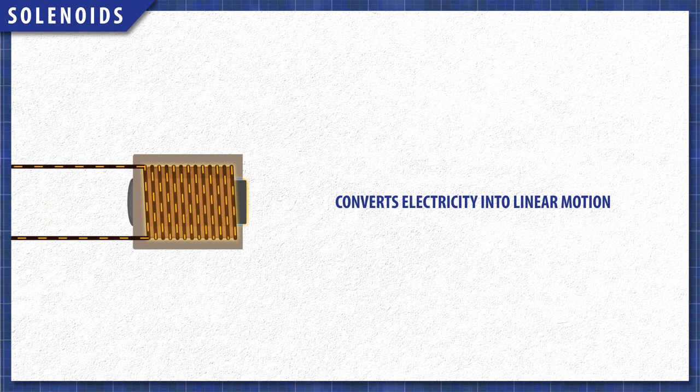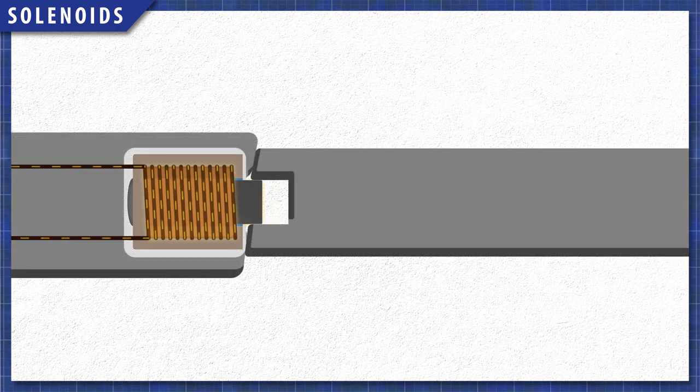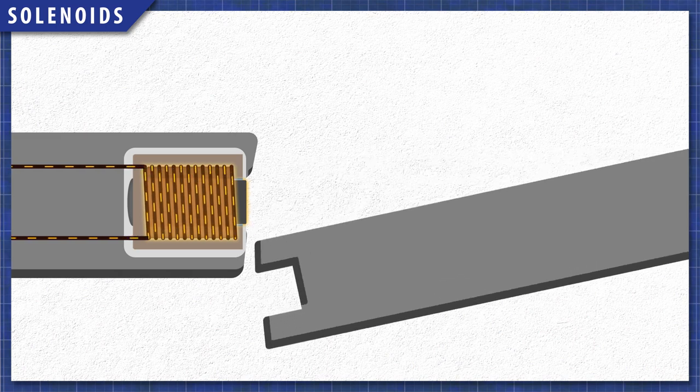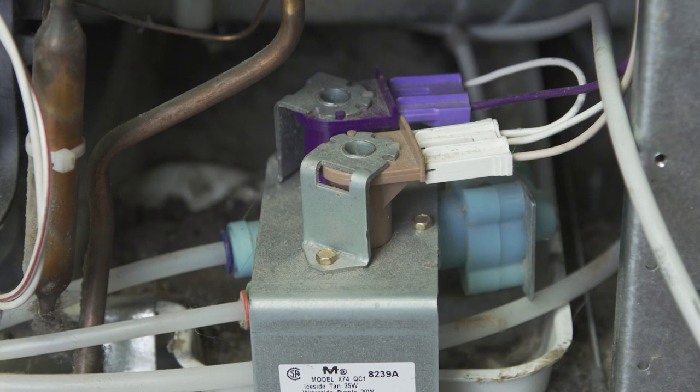Solenoids use small electromagnets to convert electricity into linear mechanical motion. This allows for the remote control of door locks, or the control of water valves in washing machines, dishwashers and refrigerators.